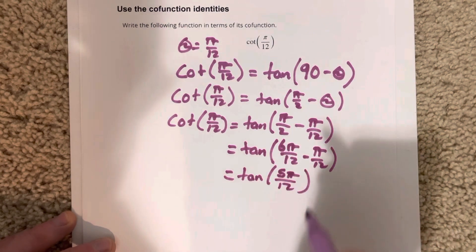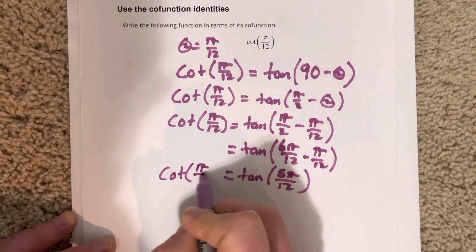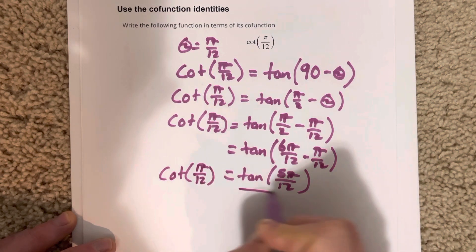So tangent of 5 pi over 12 is actually equal to cotangent of pi over 12. So that's our cofunction there.